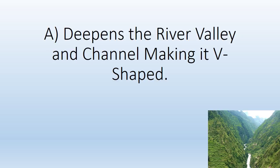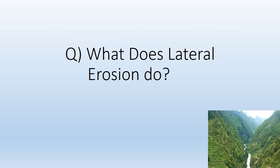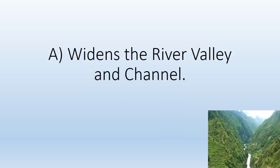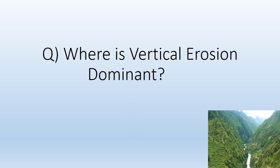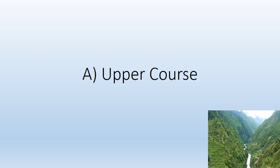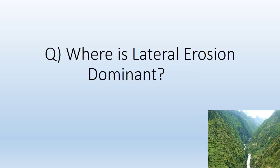What does lateral erosion do? Widens the river valley and channel. What does vertical erosion do? Deepens the river valley and channel, making it V-shaped. Where is vertical erosion dominant? The upper course. Where is lateral erosion dominant? The middle and lower course.